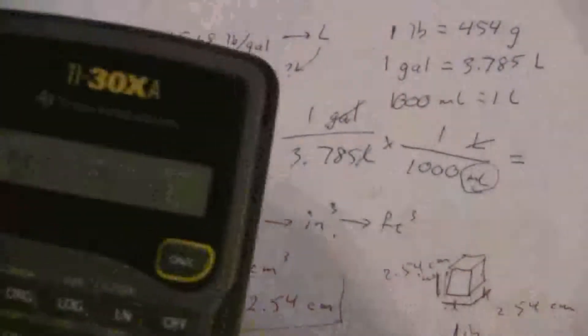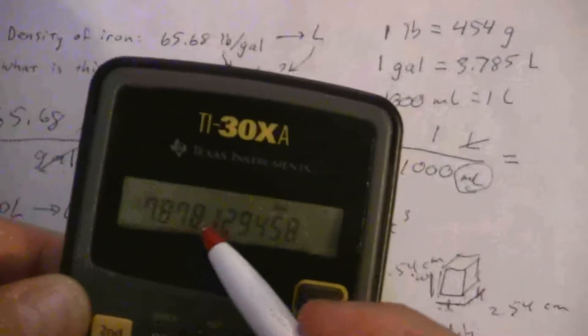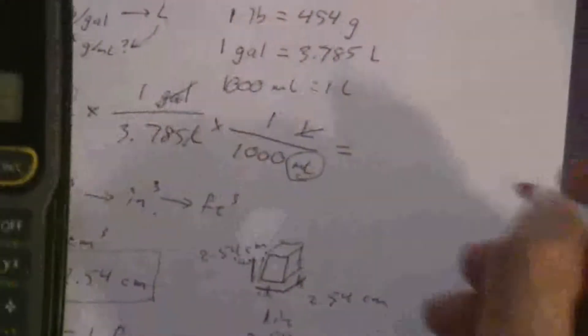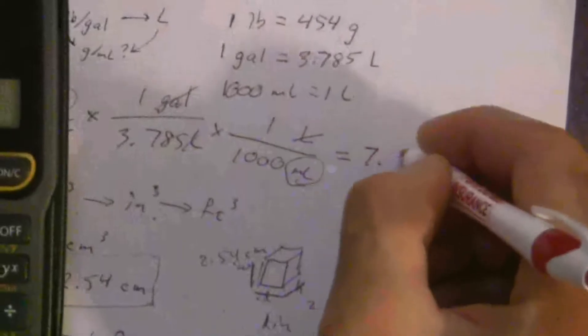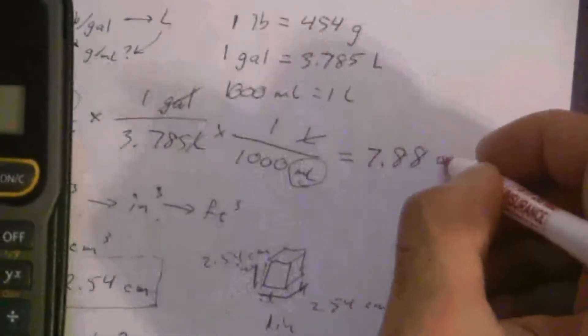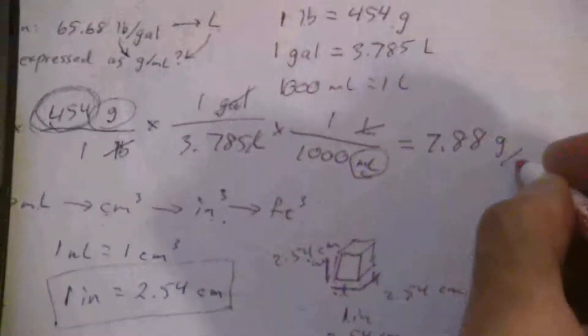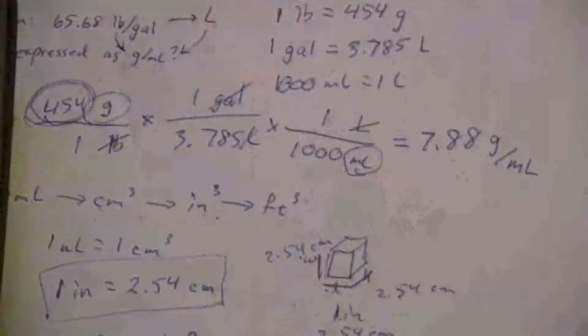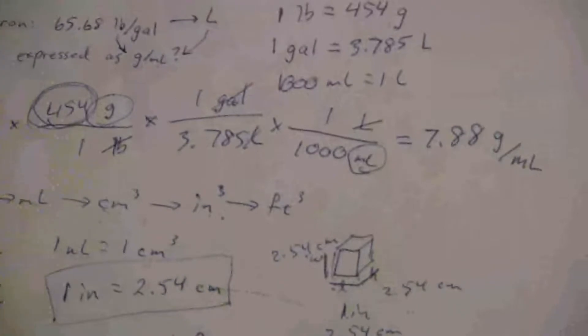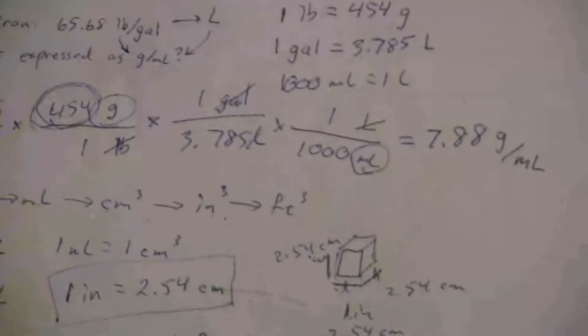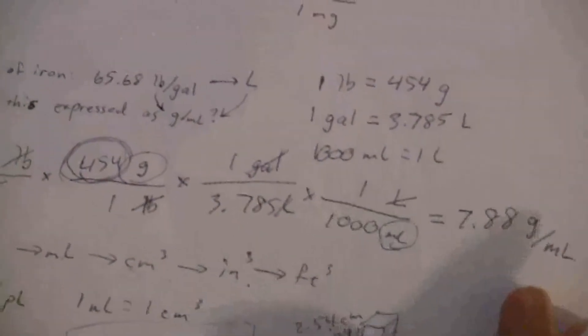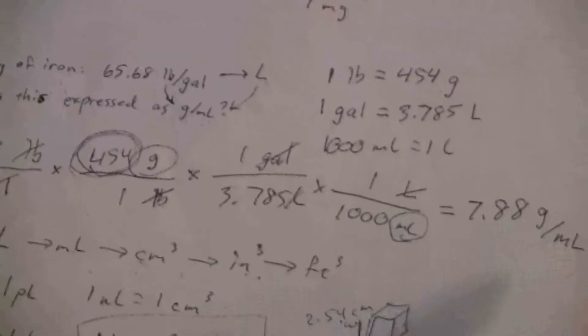But we'll just go with this and limit it to the three significant figures. So that'll be 7.88 grams per milliliter. I hope this has been helpful in your practice with conversions.